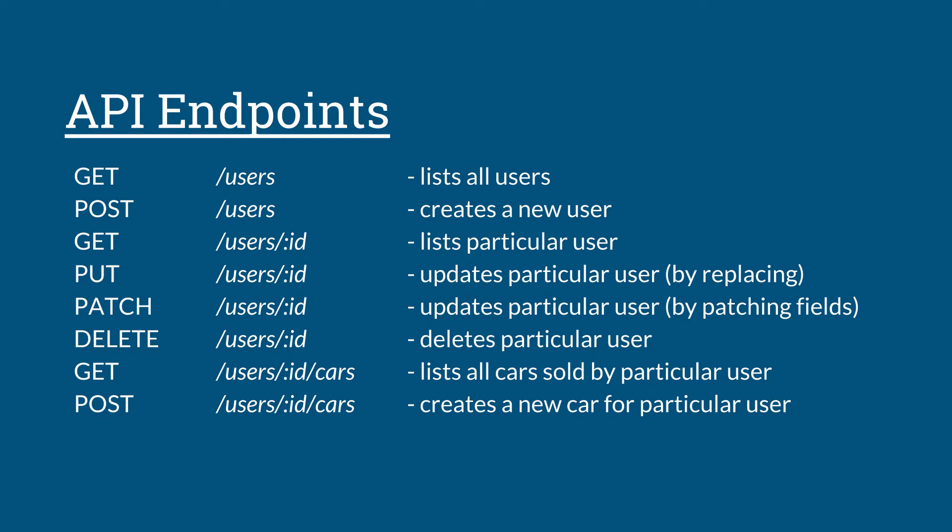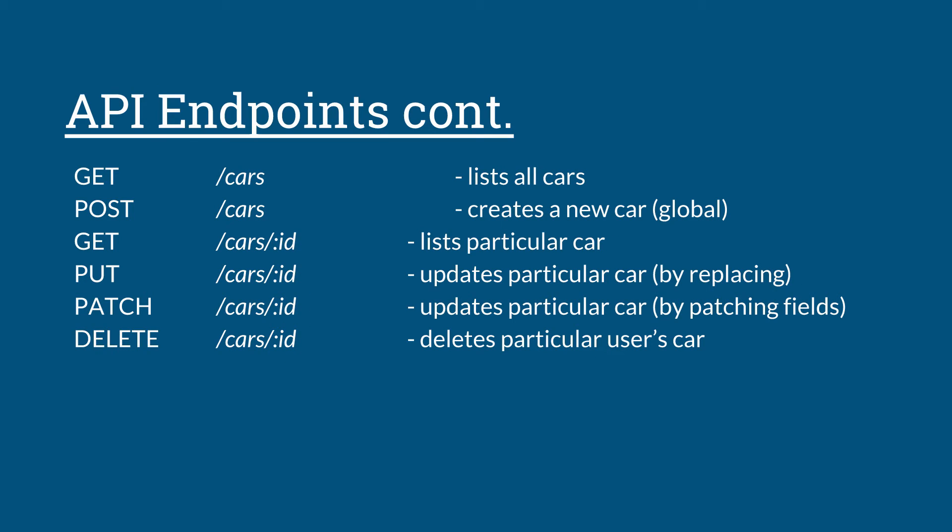Next, a DELETE request on slash users slash ID deletes a particular user. We also have the route slash users slash ID slash cars — a GET request to that route lists all the cars currently being sold by that particular user. A POST request to that same route creates a new car for that particular user. Moving on, for our Car model: a GET request to slash cars returns a list of all the cars in our database, and a POST request to slash cars creates a new car.